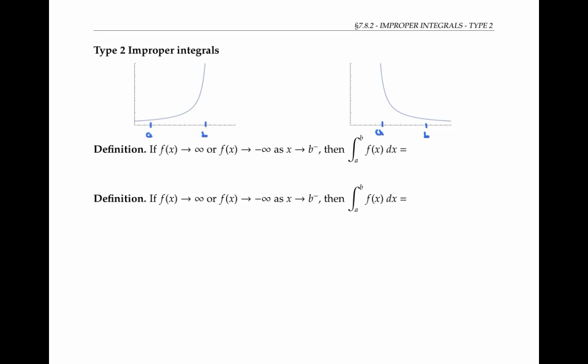To integrate a type two improper integral like this one, or this one, we integrate our function over larger and larger sub-intervals on which the function is finite, and then we take a limit.